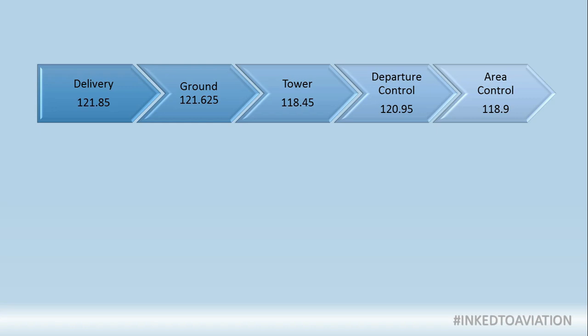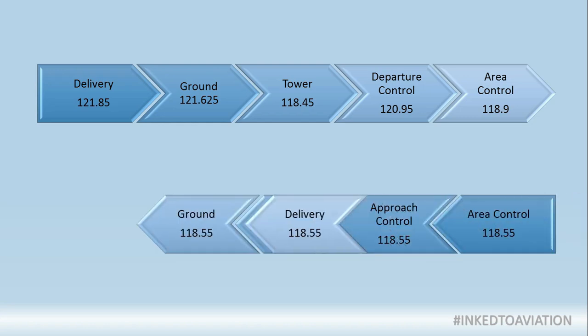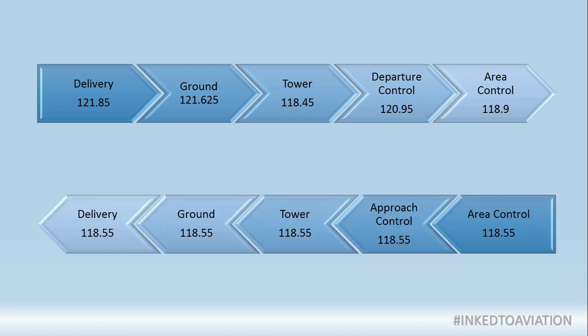Upon reaching closer to Vijayawada, it becomes a reverse order — the aircraft needs to contact approach control, tower, ground, and delivery until it lands in Vijayawada.